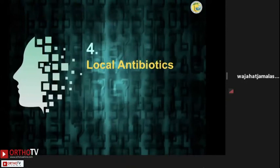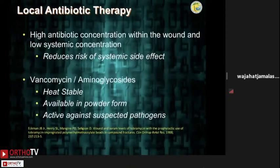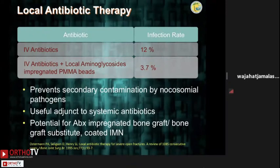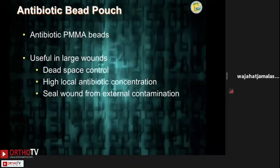Number four: local antibiotics. Local antibiotics provide high concentration within the wound, reduce systemic side effects, and are heat-stable. A review of more than 1,000 cases showed a 75% decrease in infection rate. This has become the basis for their usage with bone grafts, bone cements, and coated implants — both extramedullary and intramedullary. Especially in large wounds, they decrease dead space and also seal the wound from external contamination.